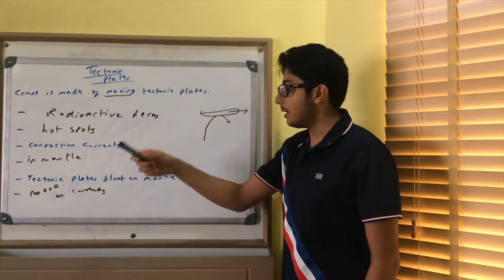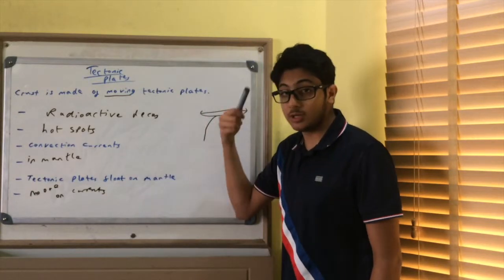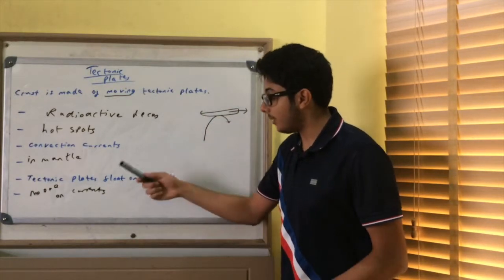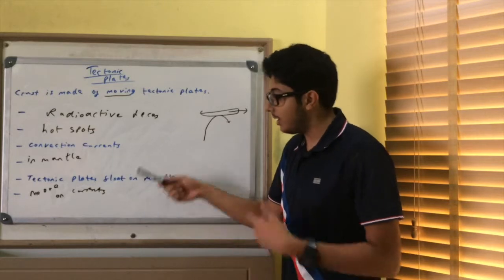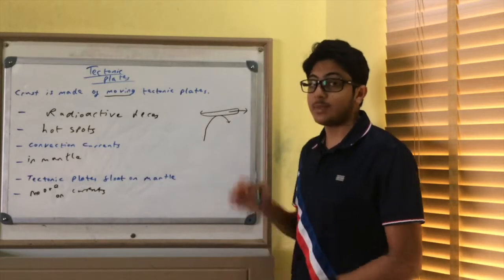So these are your marking points. Radioactive decay causes hot spots and convection currents, which creates convection currents in the mantle. And tectonic plates that float on the mantle, they move on these currents.